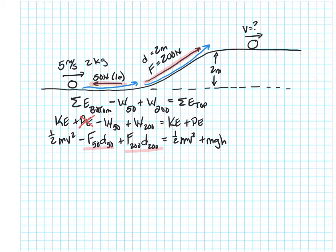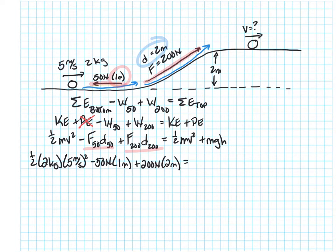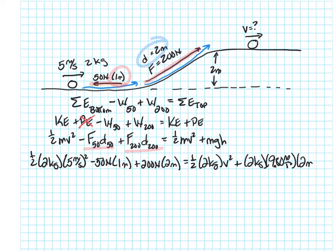Let's start over here and put in the numbers. One-half times mass 2 kilograms times the velocity squared — 5 meters per second squared — minus 50 Newtons times the distance, which is 1 meter, plus 200 Newtons times its distance, which is 2 meters. That equals one-half times 2 kilograms times my unknown v squared at the top, plus 2 kilograms times 9.8 meters per second squared times 2 meters.